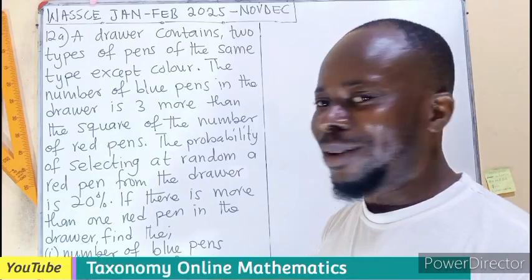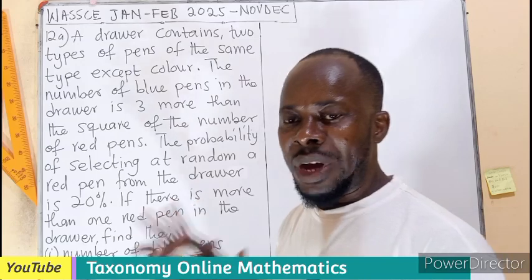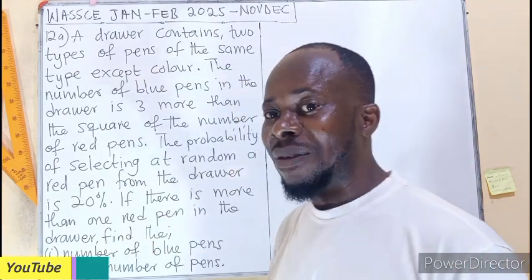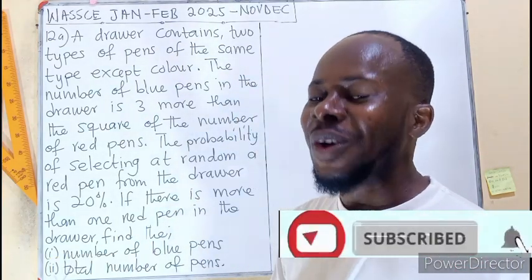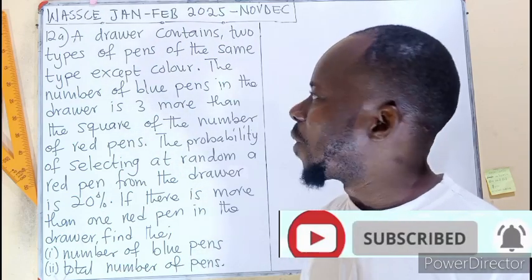Hello, welcome to Tazunomi Online Mathematics. We are on question 12A, WASSCE 2025, the first series. They call it the first series or the first batch, which is January, February edition, Core Mathematics.